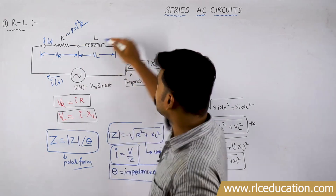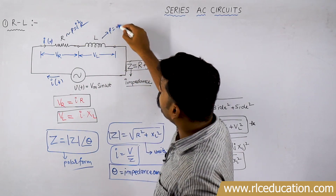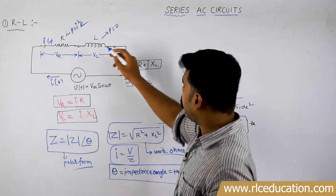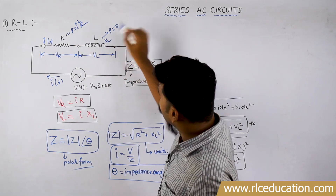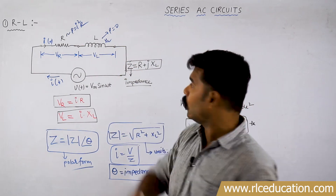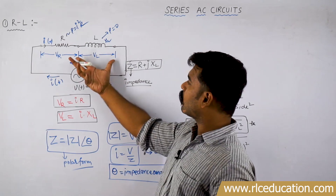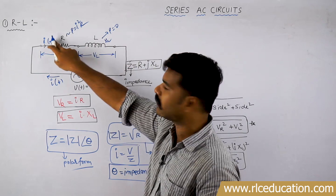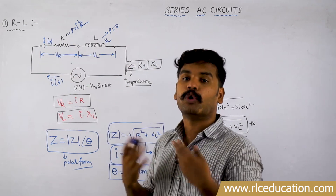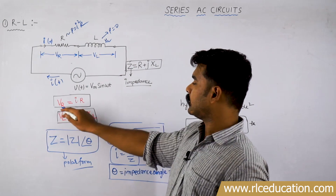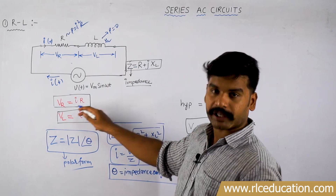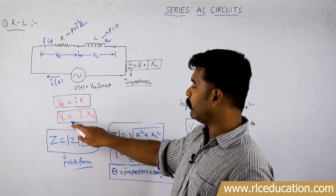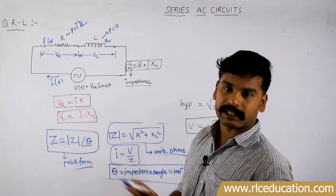Power in an inductor is equal to zero — it does not take any power, but still it can drop the voltage. That property of an inductor which is capable of doing that is reactance, and the units of reactance are the same as resistance, that is ohms. The voltage dropped across the resistor is VR = I × R as per Ohm's law. Similarly, voltage dropped across the inductor is VL = I × XL.